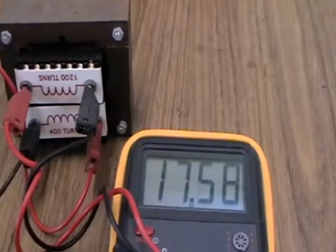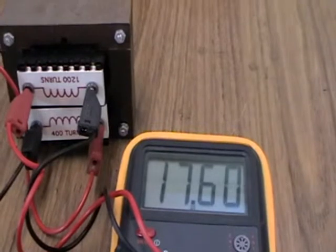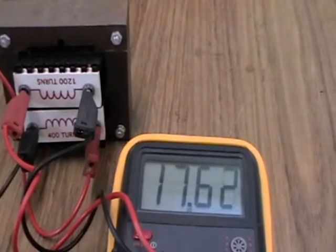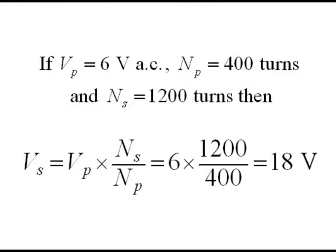There is a small amount of energy losses so we are not quite at 18 volts. In theory, VS equals VP times NS over NP equals 6 times 1200 over 400 equals 18 volts. This is called a step up transformer.